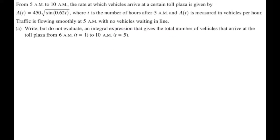From 5 a.m. to 10 a.m., the rate at which vehicles arrive at a certain toll plaza is given by A of T, which is 450 root sine of 0.62T, where T is the number of hours after 5 a.m., and A of T is measured in vehicles per hour. Traffic is flowing smoothly at 5 a.m. with no vehicles waiting in line.